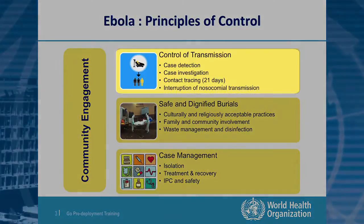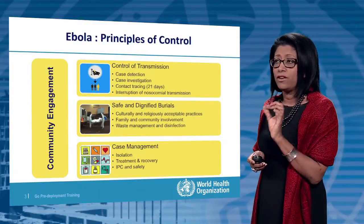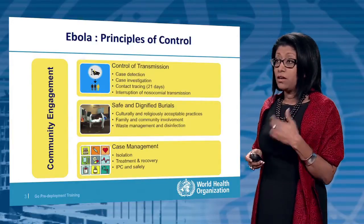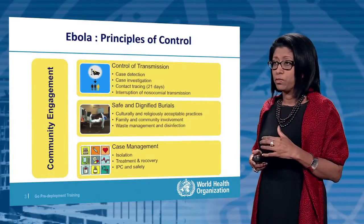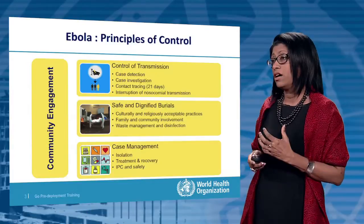In the control of transmission, there are some key things that we do: case detection, case investigation, contact tracing — or monitoring for 21 days, because that's how long the incubation period is — and the interruption of transmission. In another module, we're going to talk about safe and dignified burials, and in a previous module we already talked about case management. This graphic puts the three together to show they are very closely interlinked.